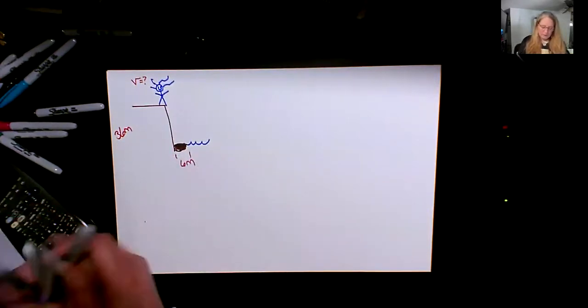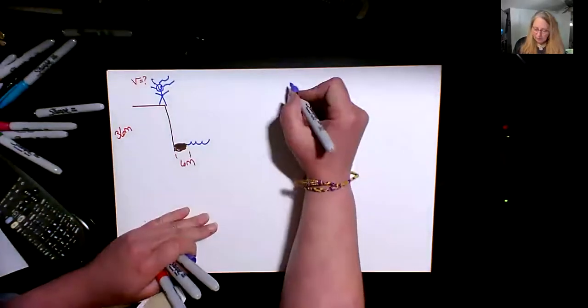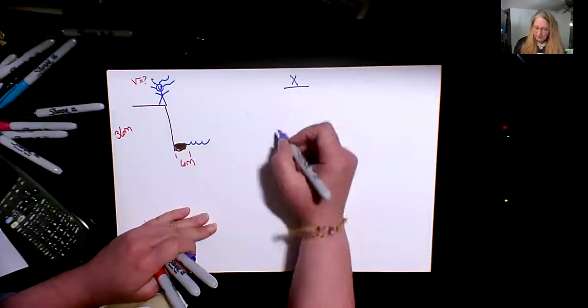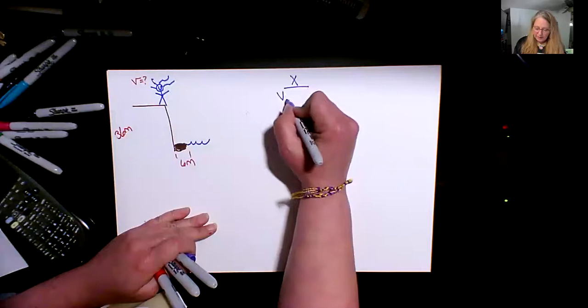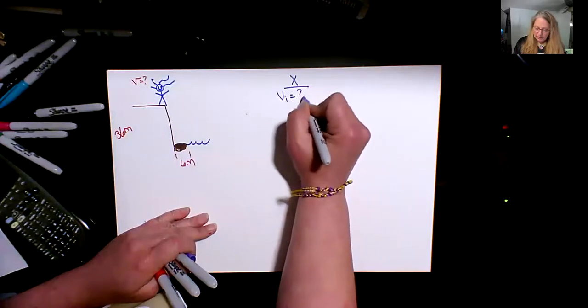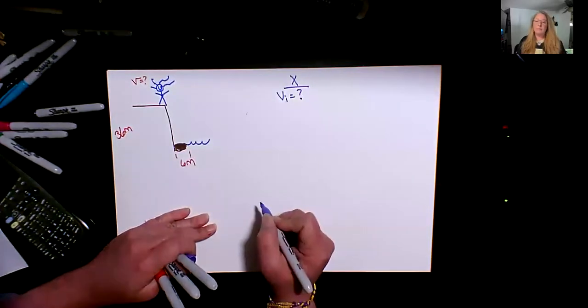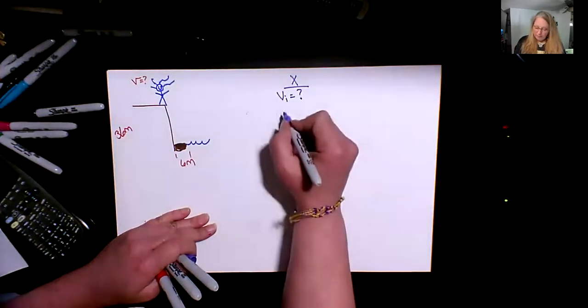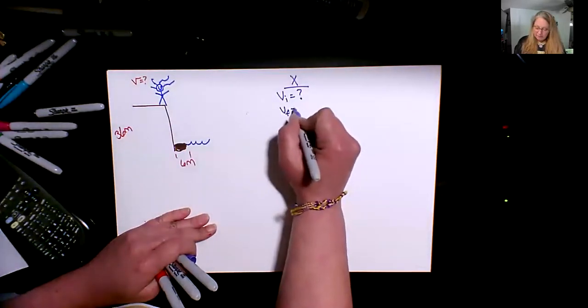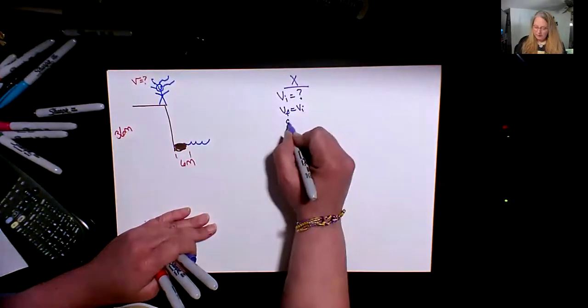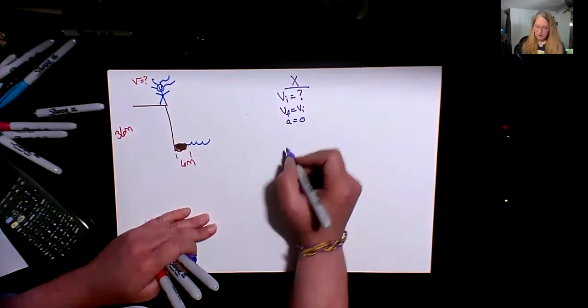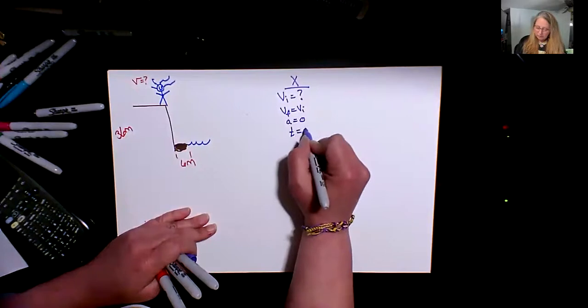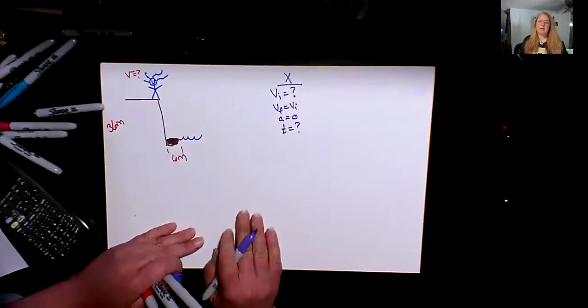So we can make a list for ourselves and go in the x direction, do we have anything? V initial? Well that's a big question mark, we don't know. If we don't have air resistance then v final equals the initial and therefore acceleration is zero, and we don't know how long he is in the air or she.